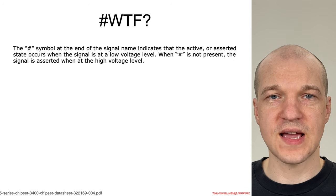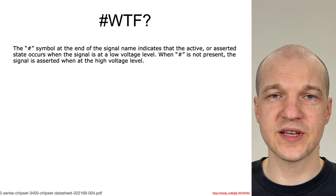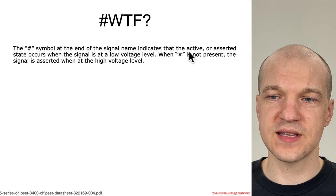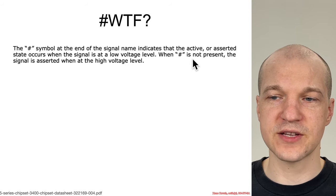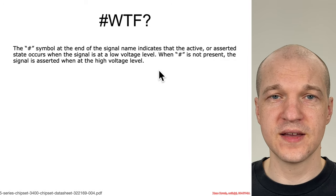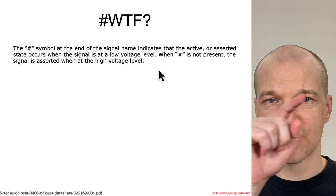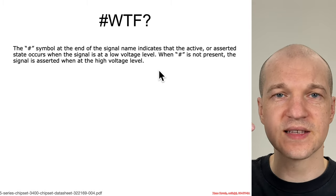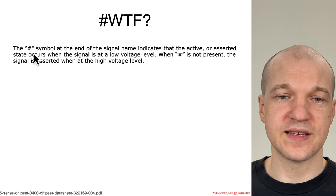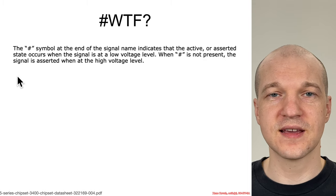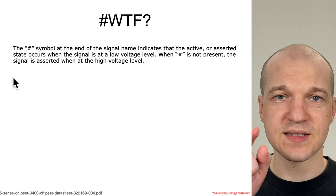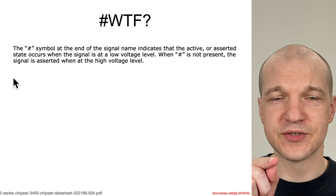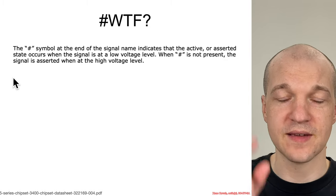You may have noticed that SMI ended with a hash symbol. From the documentation, the hash symbol at the end of a signal name indicates that the active or asserted state occurs when the signal is at a low voltage level; when the hash is not present, the signal is asserted at a high voltage level. In electrical engineering, they'll often put a bar above a signal to indicate it's active low instead of active high. Intel just uses a hash at the end to indicate that SMI# is an active low signal — so if there were a physical wire running to the processor, that wire should be pulled down to a low voltage rather than a high voltage in order to trigger SMI.